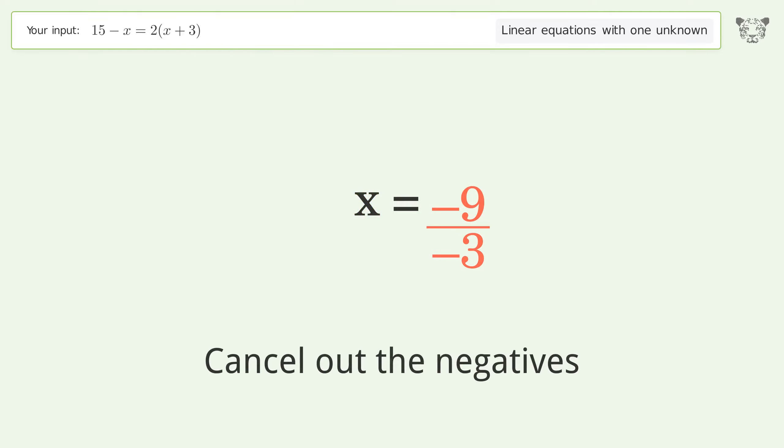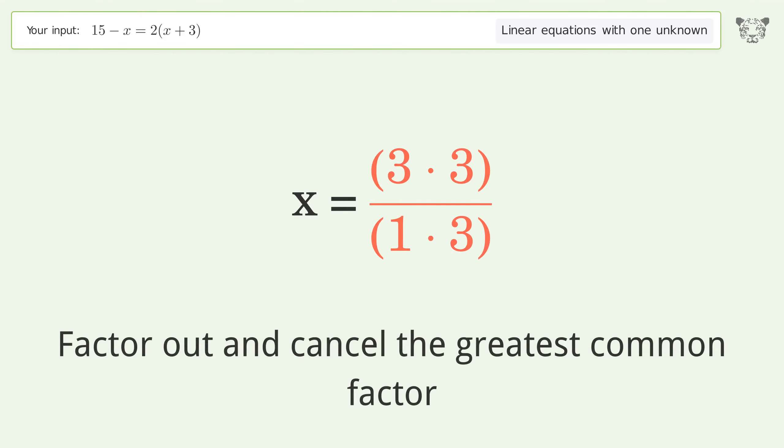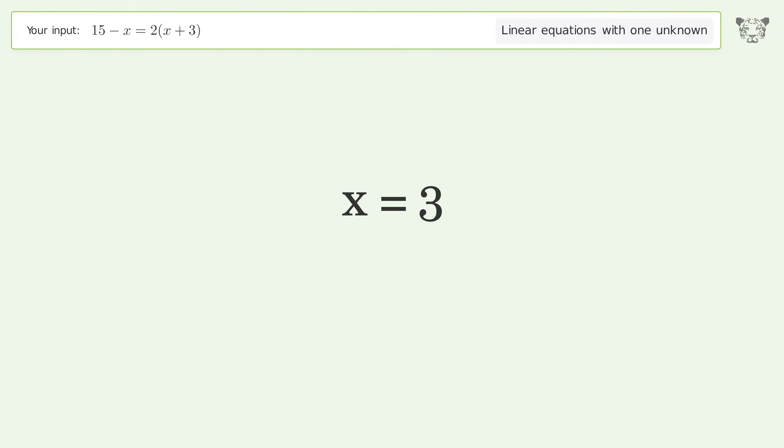Cancel out the negatives. Find the greatest common factor of the numerator and denominator. Factor out and cancel the greatest common factor. And so the final result is x equals 3.